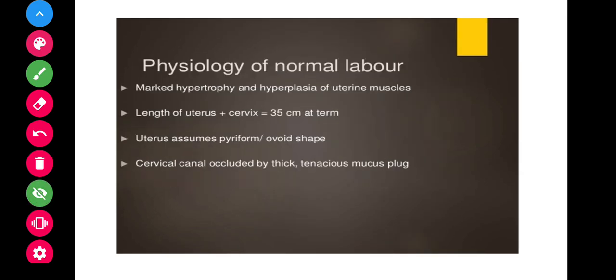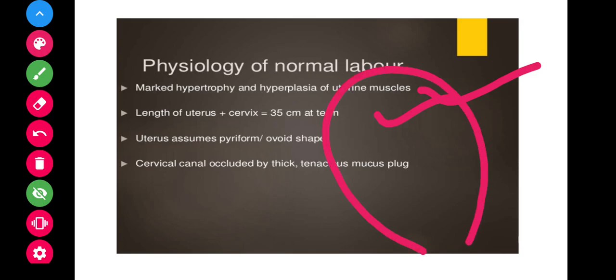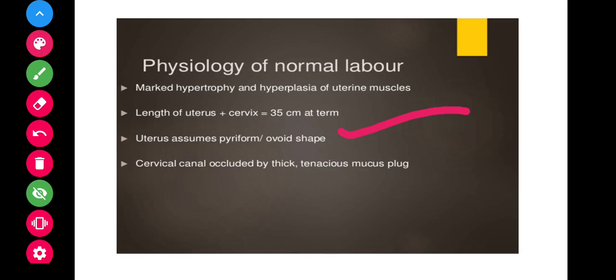The physiology of normal labor involves marked hypertrophy and hyperplasia of uterine muscles. The length of the uterus plus cervix reaches about 35 centimeters — compared to the normal uterus size of 7.5 centimeters. The uterus assumes a piriform or ovoid shape, and the cervical canal is occluded by a thick, tenacious mucus plug.